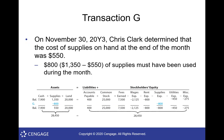November 30th: they determine the cost of supplies on hand at the end of the month was $500. If we had $1,350 worth of supplies and only $500 left, we must have used up $850 worth. Rather than tracking each individual item like a sticky note, we know our supplies account balance, then at the end of the month we count them up and see how much was used. At that point we claim it as supplies expense — supplies goes down and supplies expense goes up.